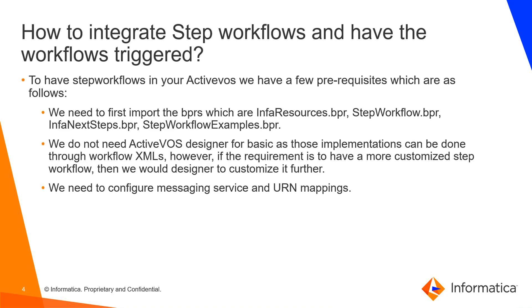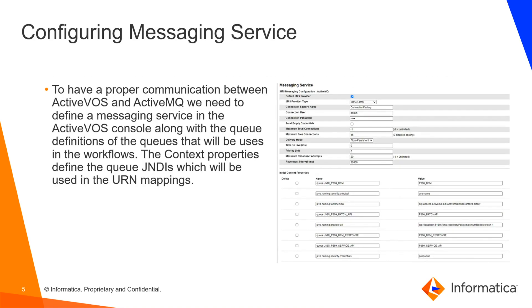The third step is to configure the messaging service and URN mappings. The messaging service is an Activos console service where we define where our message queue is present, the credentials for Activos to make a successful connection with the message queue, as well as the queue JNDIs. Queue JNDIs can be seen as variables used in Step Workflow configuration to push and consume messages.